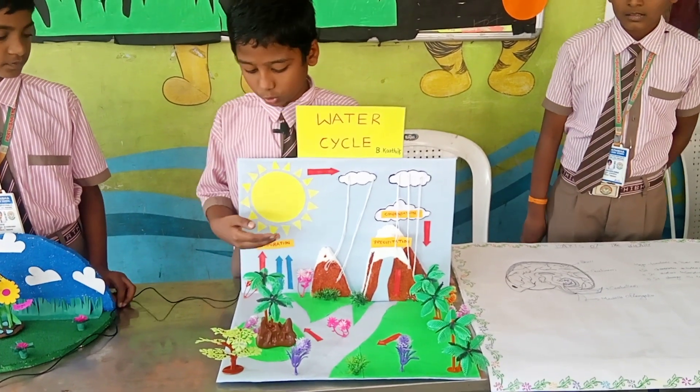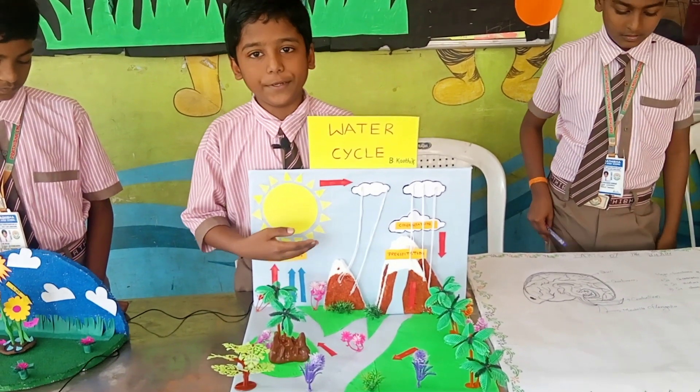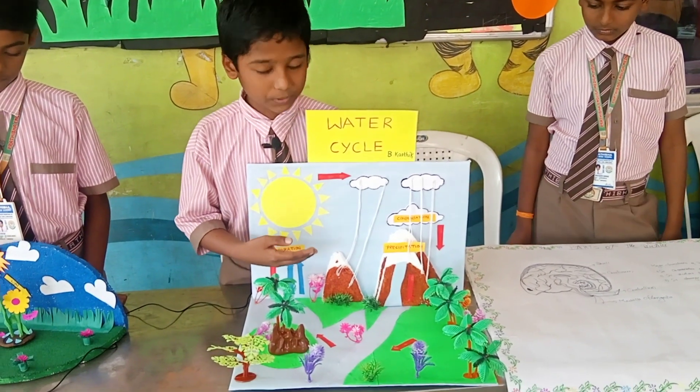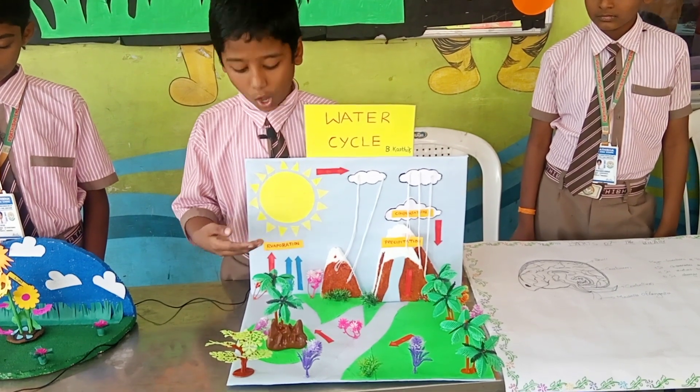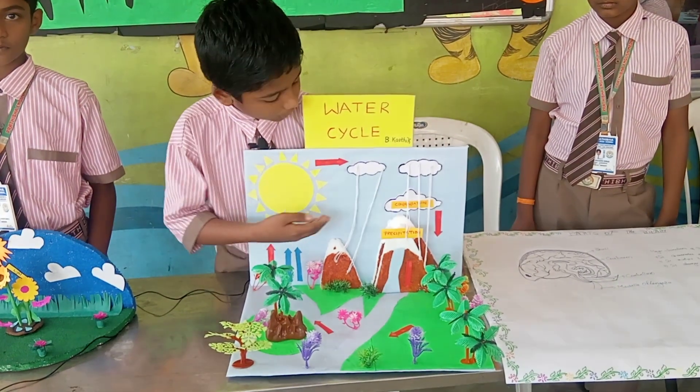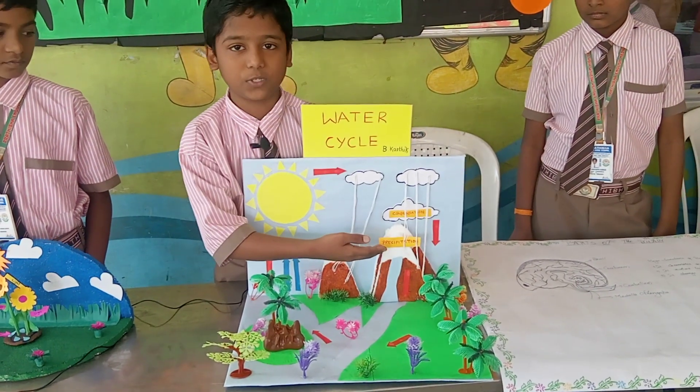The water cycle shows the continuous movement of water. It is a complex system that includes many different processes. They are evaporation, condensation, and precipitation.